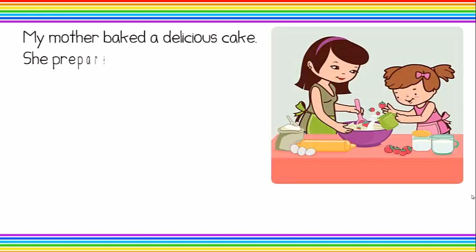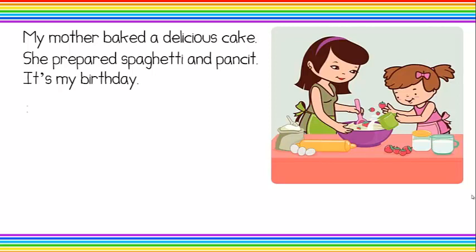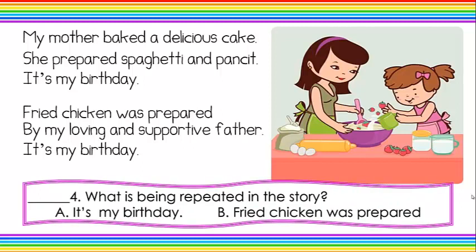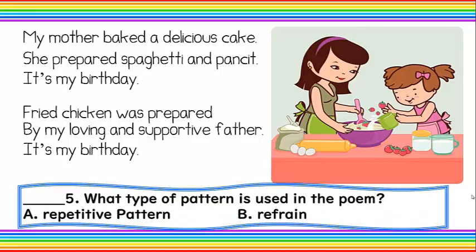Next: My mother baked a delicious cake. She prepared spaghetti and pansit. It's my birthday. Fried chicken was prepared by my loving and supportive father. It's my birthday. Number four: What is being repeated in the story? A. It's my birthday. B. Fried chicken was prepared. Yes — letter A. Number five: What type of pattern is used in the poem? A. Repetitive pattern. B. Refrain. Right — refrain.